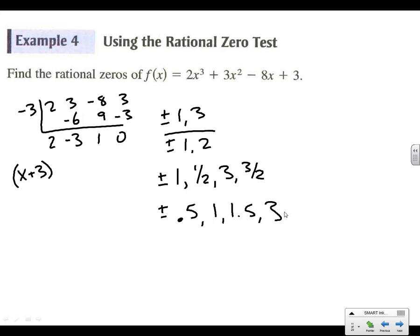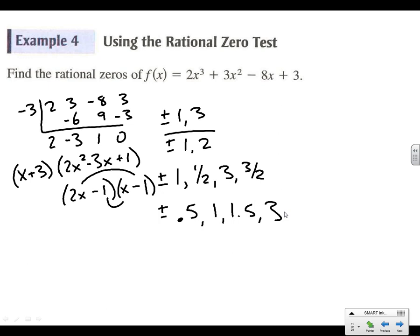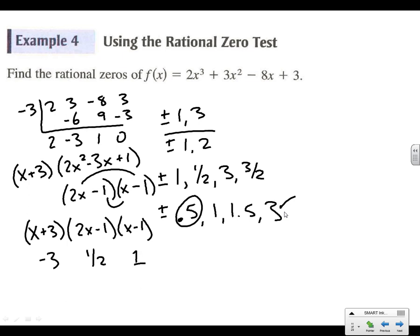So we've got x + 3 as a factor. At this point, we have 2x² − 3x + 1 remaining. Can we factor this? We'd need (2x − 1)(x − 1) — negative 2 and negative 1 — yes, it works. So our rational zeros are: x + 3 gives negative 3, 2x − 1 gives positive 1/2, and x − 1 gives positive 1. All three are on our possible list and check out — those are all the rational zeros.